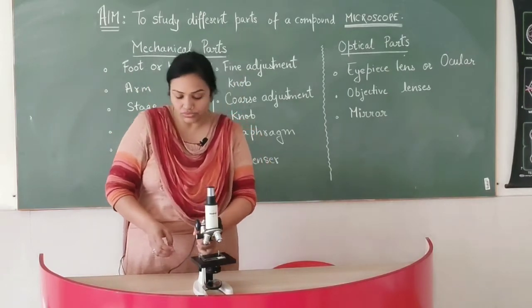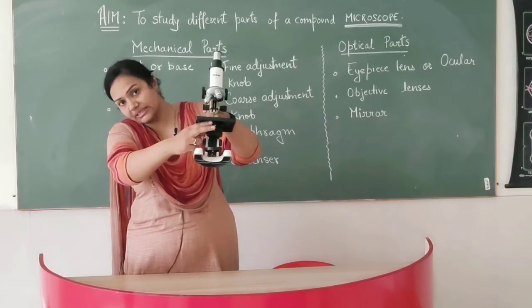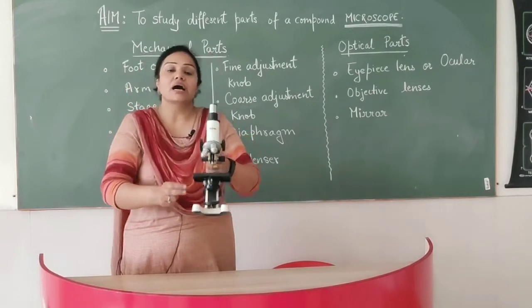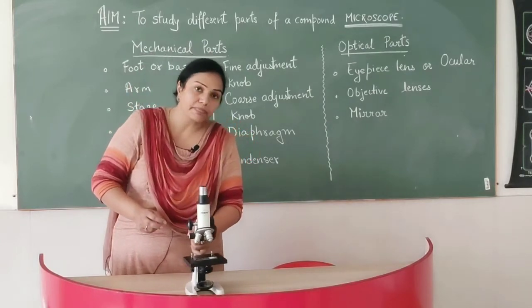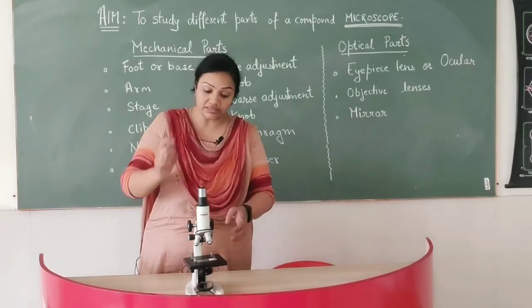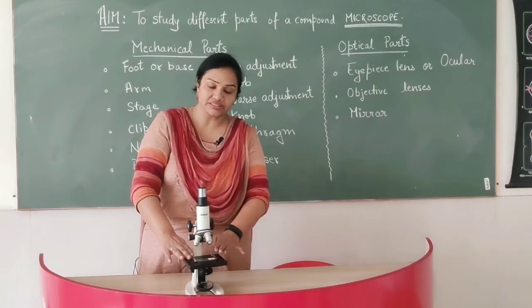Now coming to diaphragm and condenser. These two knobs you see here, these are diaphragm and condenser. They are helping and condensing to adjust the amount of light entering on the stage so that we can see the objects clearly.